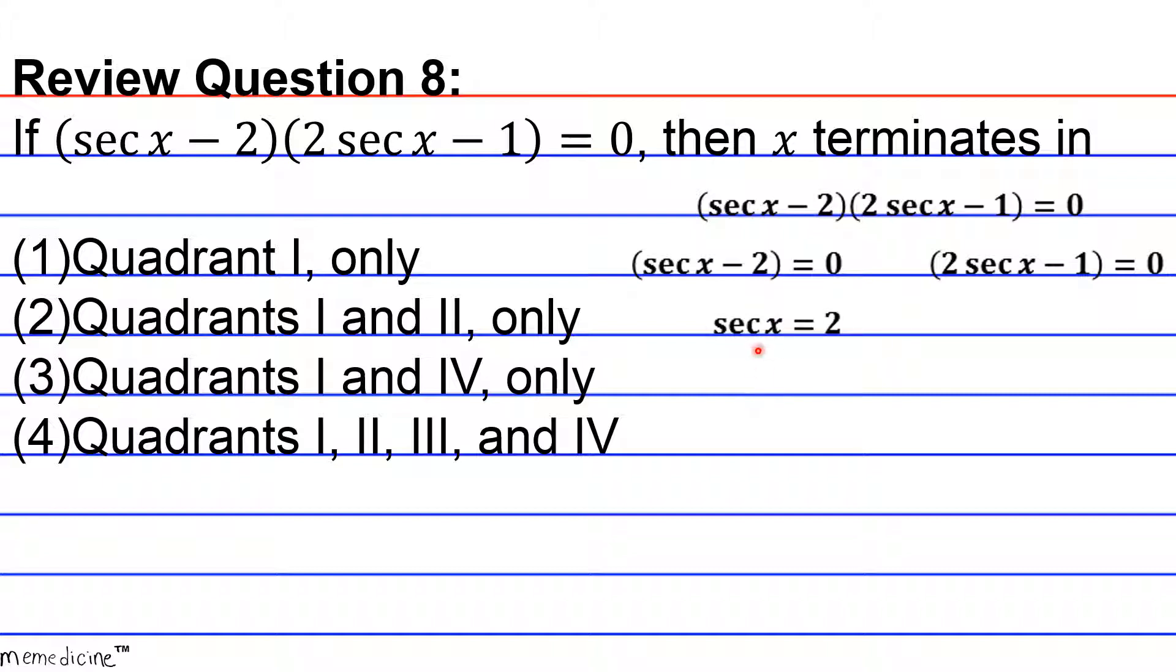Therefore, we have when we subtract 2 from both sides, the secant of x is equal to 2. Or we also have when we add 1 to the left hand side and also to the right hand side and then divide by 2, we wind up with that the secant of x is equivalent to one half.